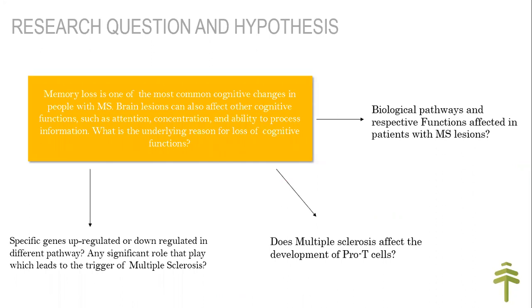I penned down my central research question and hypothesis. Loss of cognitive functions — that is, memory loss — is one of the most important symptoms in multiple sclerosis. Knowing the underlying reason for the loss of cognitive function could be a great contribution to the scientific community. My basic research question was to identify gene expression levels at the transcriptomics level to identify the underlying reason for loss of cognitive functions. I divided my central question into three different hypotheses.